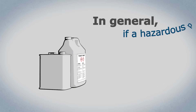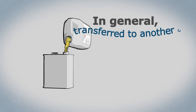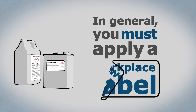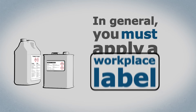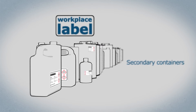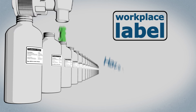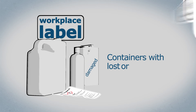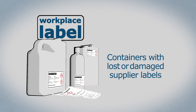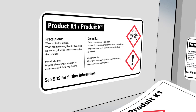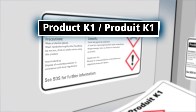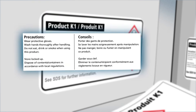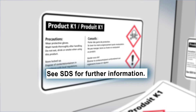In general, if a hazardous product is transferred to another container for use in the workplace, you must apply a workplace label. Workplace labels must be applied to secondary containers, hazardous products made and used in a workplace, and containers with lost or damaged supplier labels. Workplace labels must contain the product identifier or name, safe handling information, and reference to the safety data sheet.